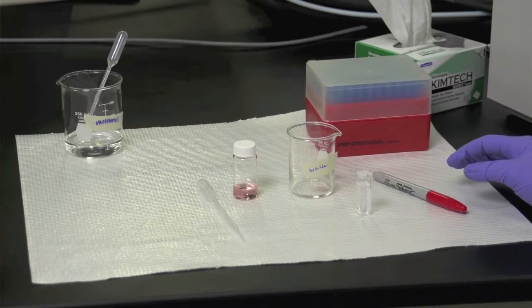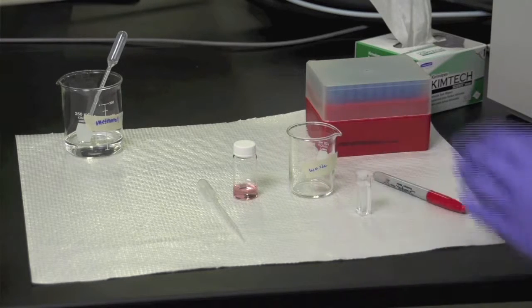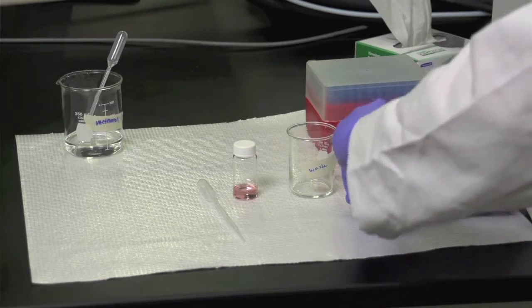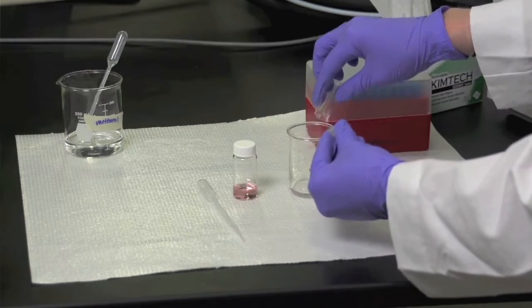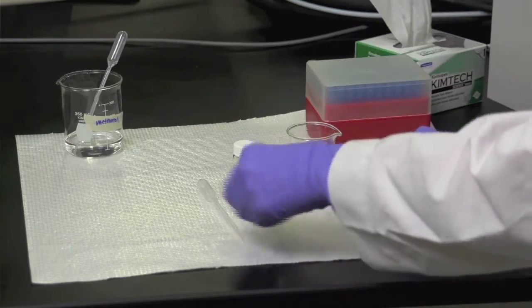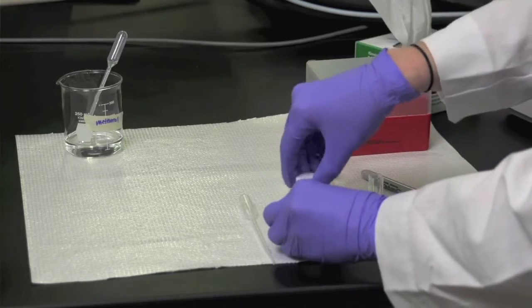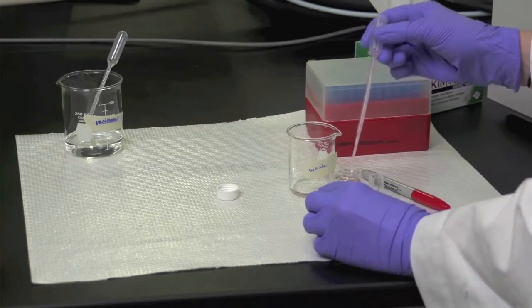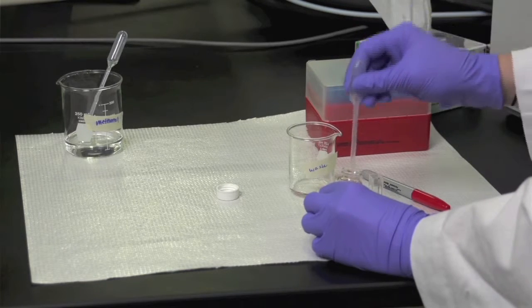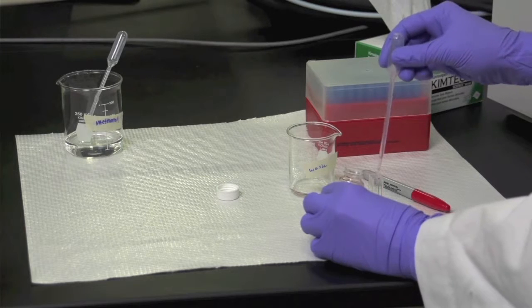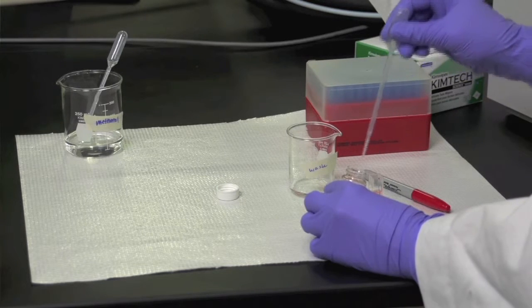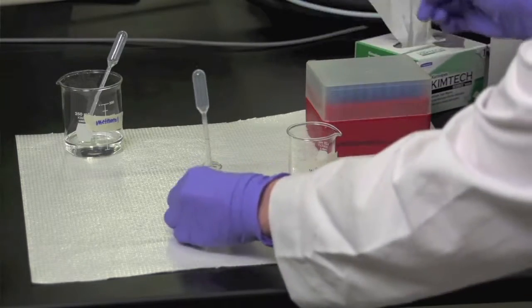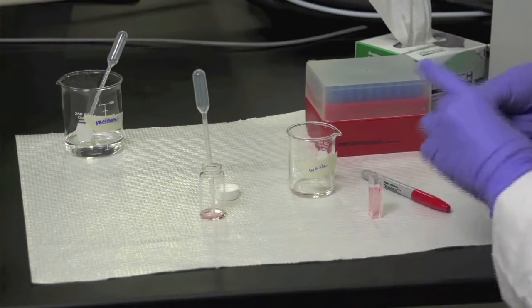To collect the cyanine dye spectrum, we'll want to use the same cuvette as we did for the background so that the inconsistencies are the same. Dump out the methanol into the waste, and then fill the cuvette two thirds of the way full with the dye solution. It needs to be two thirds of the way full so that we can ensure that the light beam goes through the sample.